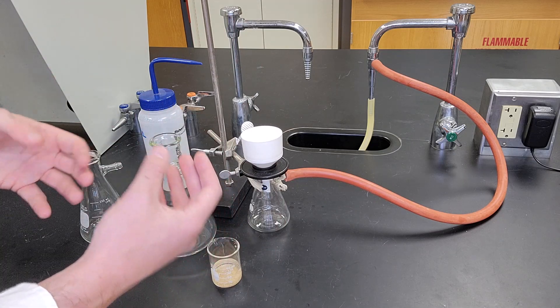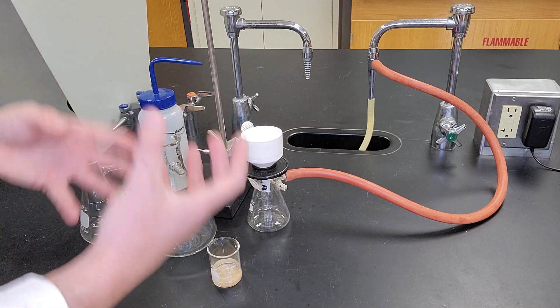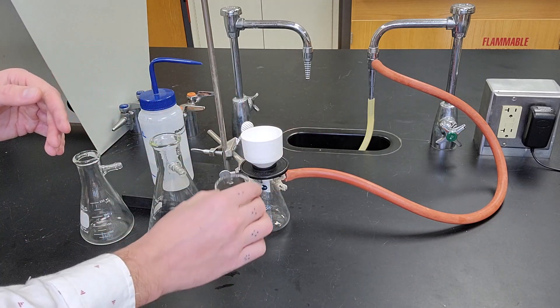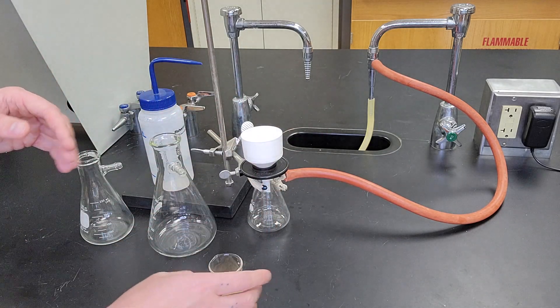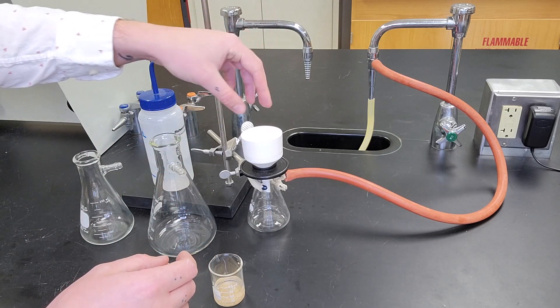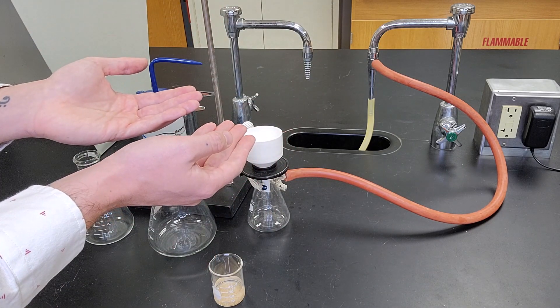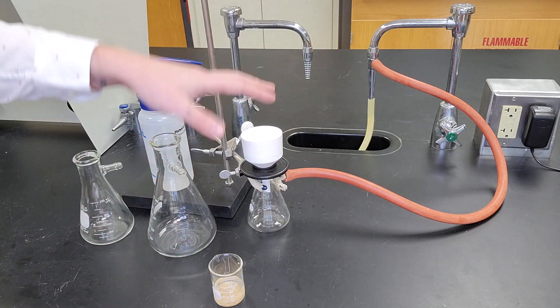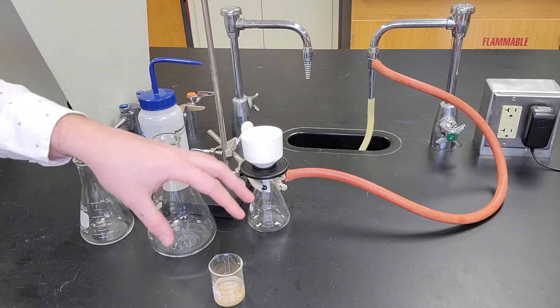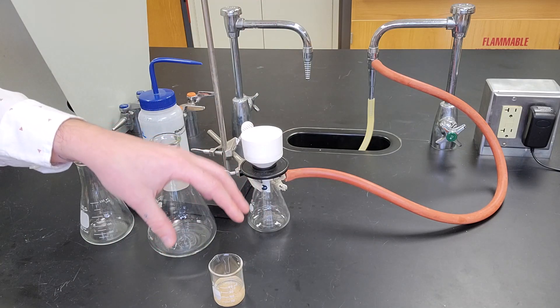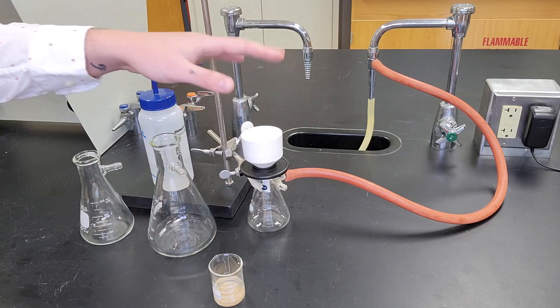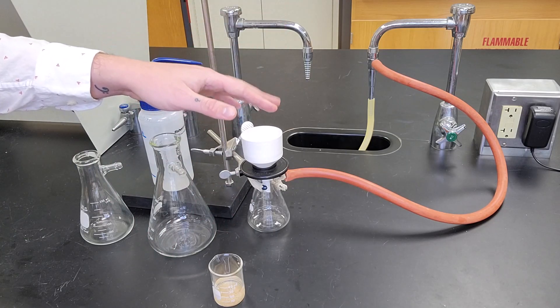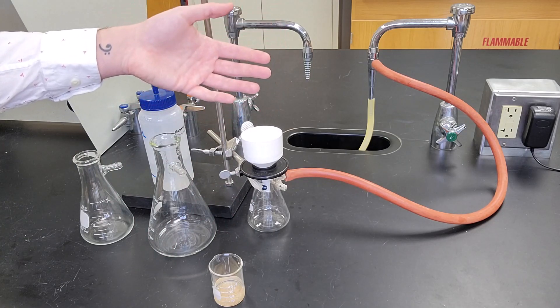What that's going to do is allow the filter paper to adhere to the Buchner funnel and create a seal, so when I do end up pouring my solution and heterogeneous mixture into my filter, it doesn't go around the outsides of the filter paper and fall through the bottom. We want to make sure we wash with solvent first to adhere the filter paper to the Buchner funnel, otherwise you run the risk of losing product.